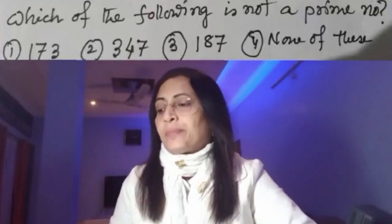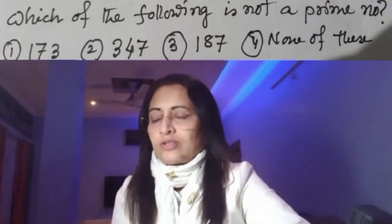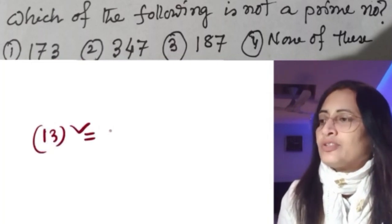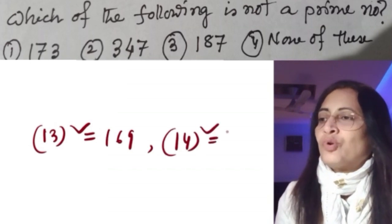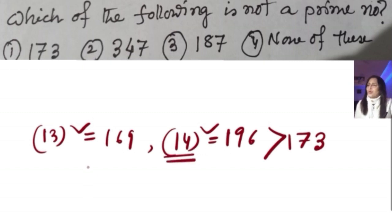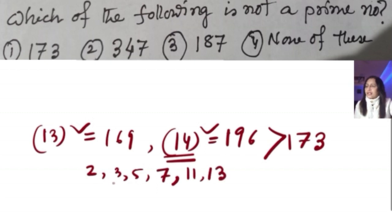Next question: which of the following is not a prime number? For 173: we note that 13 squared is 169, which is less than 173, and 14 squared is 196, which is greater than 173. So we test prime numbers up to 13: that is 2, 3, 5, 7, 11, 13 — six prime numbers. None of these divides 173 completely, so 173 is a prime number.